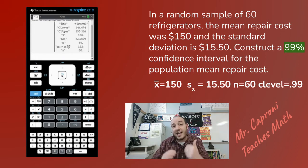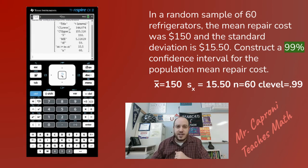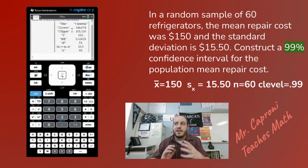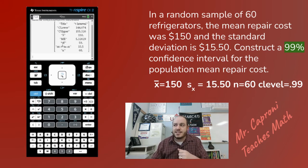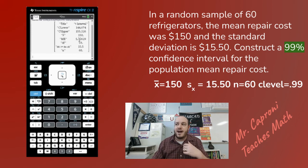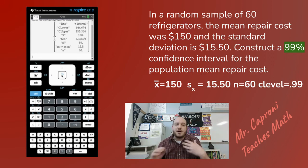Hit okay and you're done. It breaks down everything you need for a confidence interval. Our confidence interval itself goes from C-lower to C-upper, so the final answer is from $144.67 to $155.33. That means the mean repair cost for the whole population should be somewhere between those two numbers with 99% confidence. It also gives you the degrees of freedom (DF) and the margin of error (ME), which is 5.33 — meaning we add and subtract 5.33 from the sample mean of 150 to get those bounds.